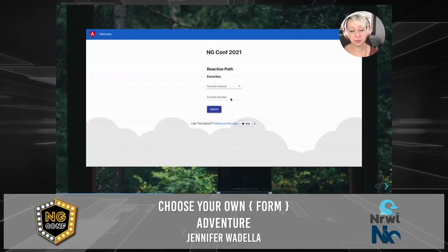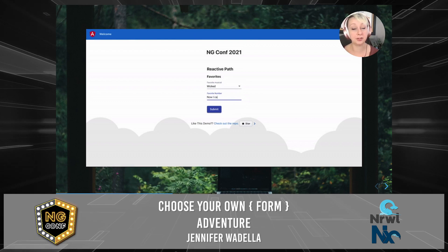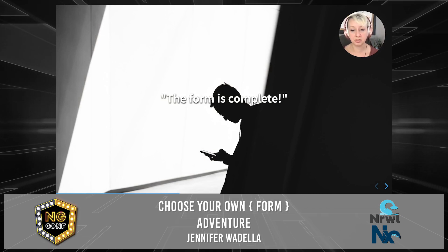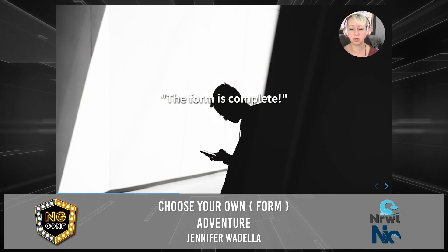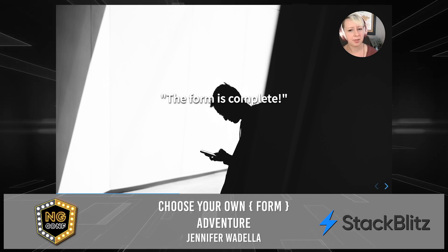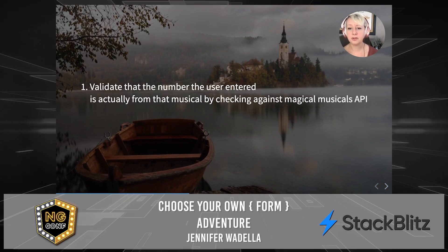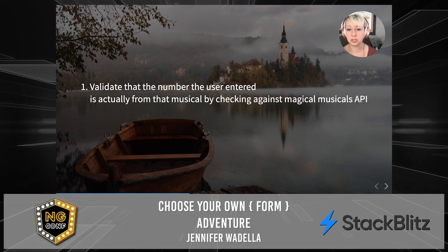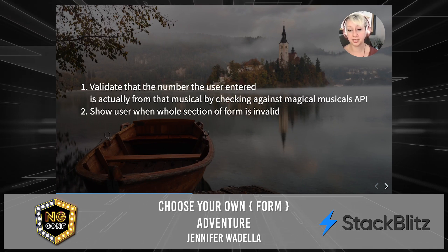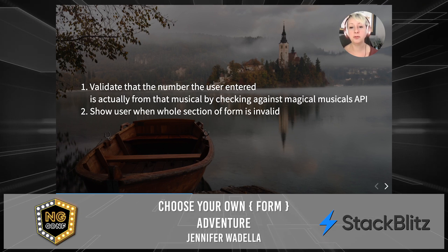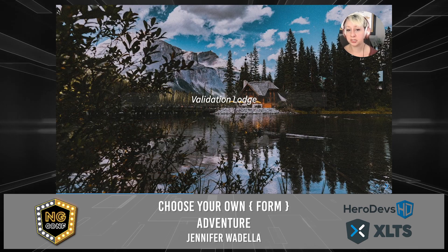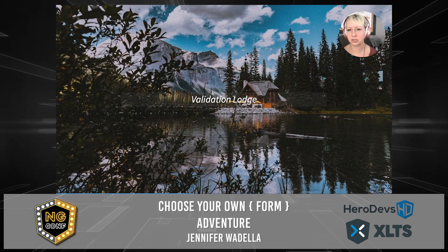As she was testing the form, the sorcerer appeared with a poof. 'You have completed my form!' he exclaimed. But the sorcerer played with the form and seemed unsatisfied. 'What if the musical number the user enters isn't actually from the musical they selected? I want to validate the number entered is actually from the musical by checking against my magical musicals API. It should also be very obvious to the user that the whole section is invalid when they are wrong.' And with another poof, he disappeared.